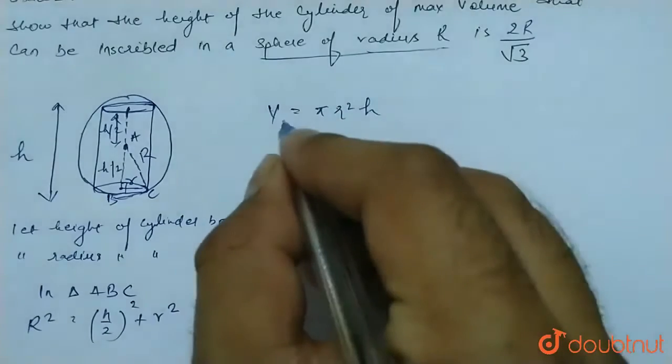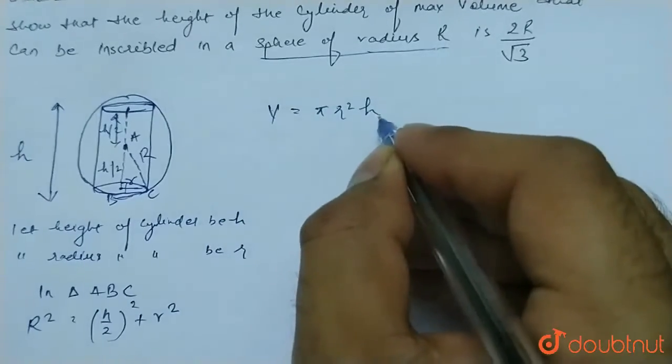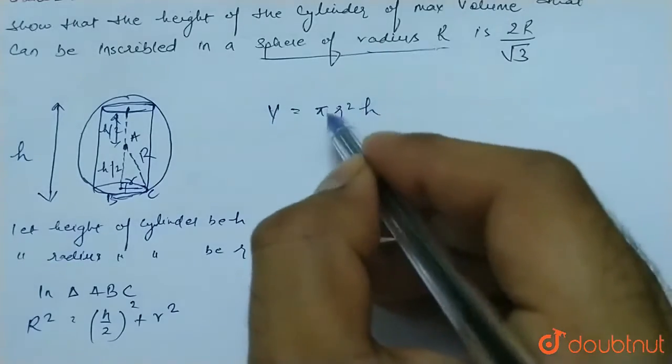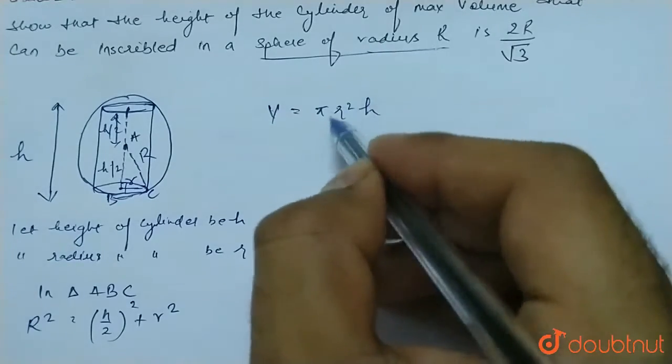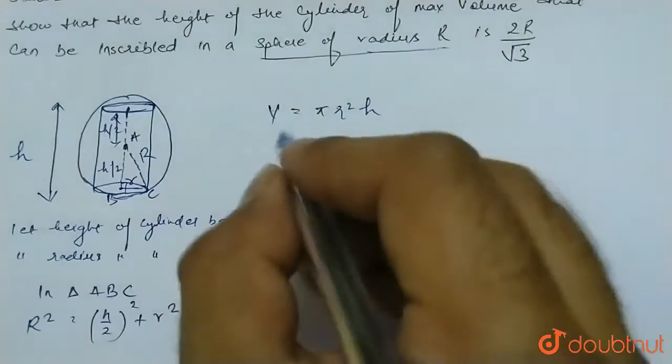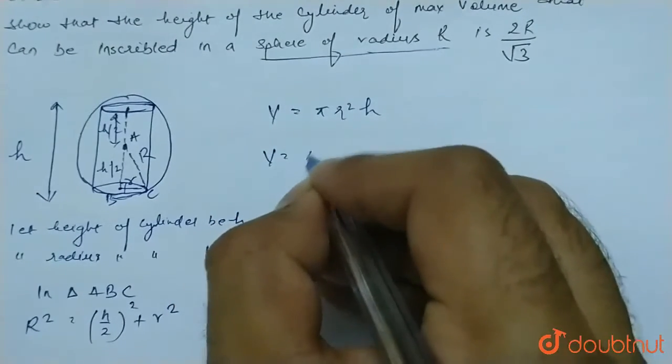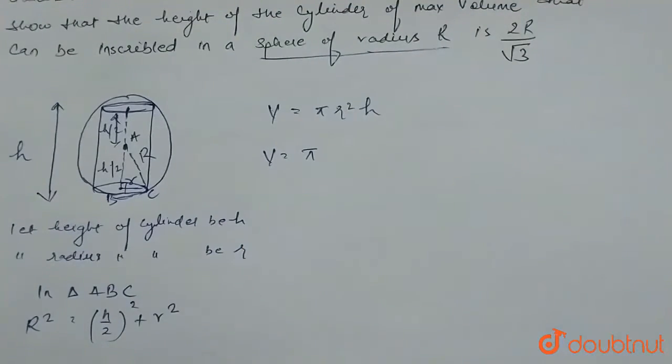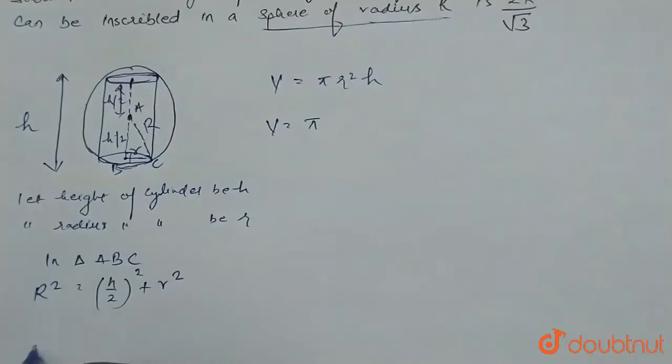We have volume V = πr²h, and we have to find the relation in h and R. So we don't need this r. We will remove this r by this relation. From here we can say that r² equals capital R² minus h² by 4.